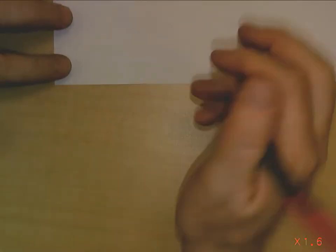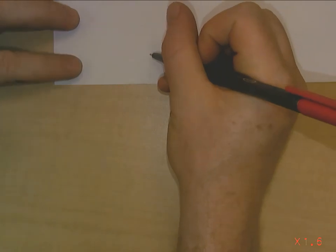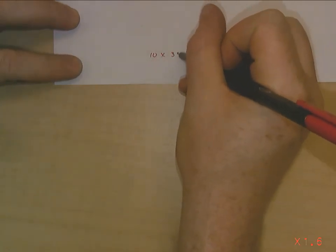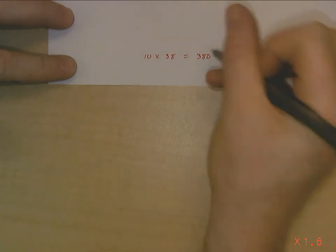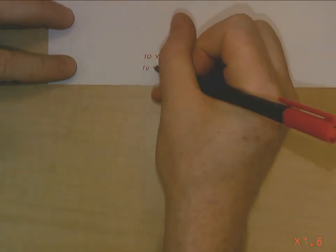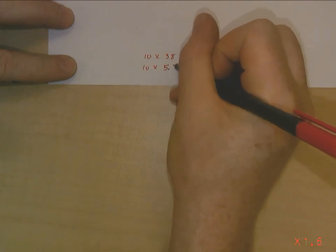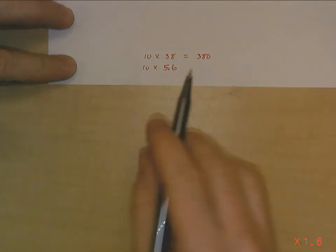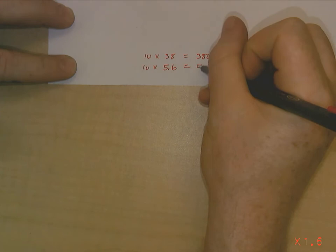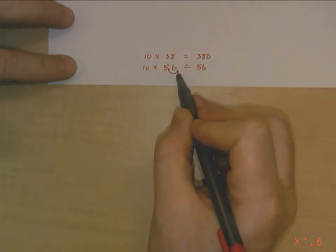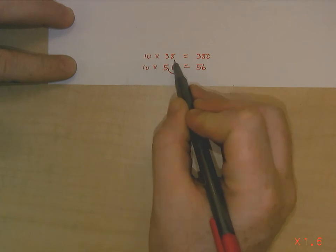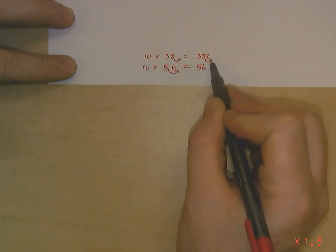So let's say, 10 times 38. 10 times 38 is 380. I just add a zero to the end of that. 10 times 5.6 is 56. Because I multiply by 10 and I move it to the right one time. Just like here, I move it one time to the right to make it 380.